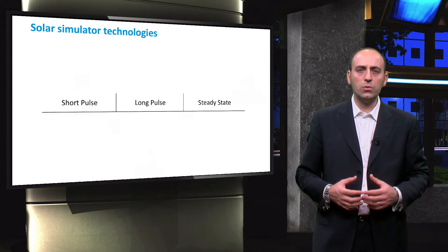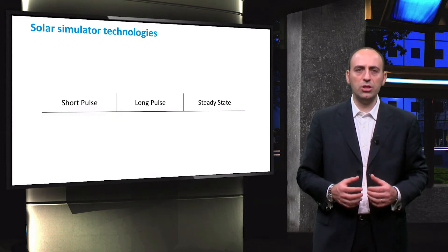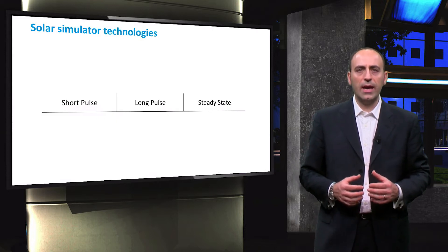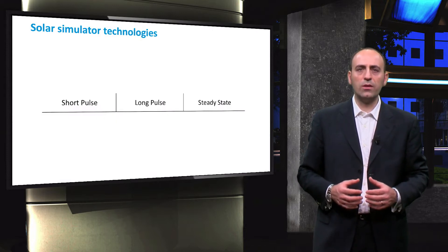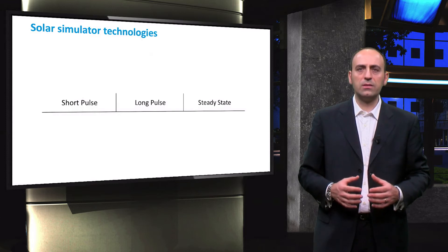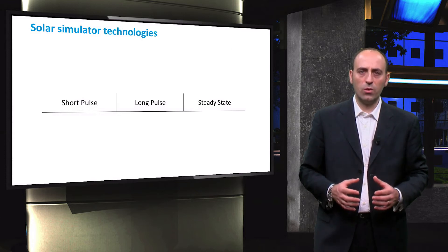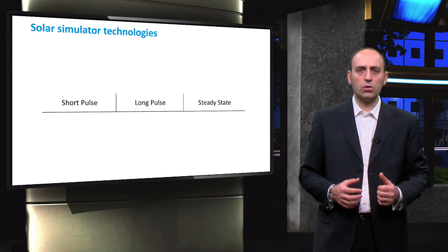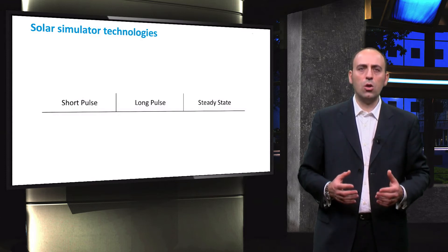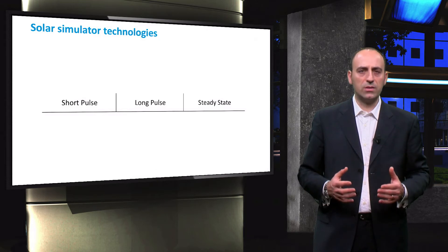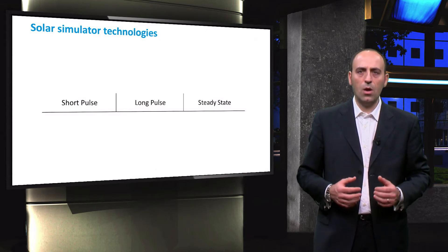In order to replicate the AM1.5G spectrum, a solar simulator is employed. There exist three types of solar simulator: short pulse, long pulse, and steady state.